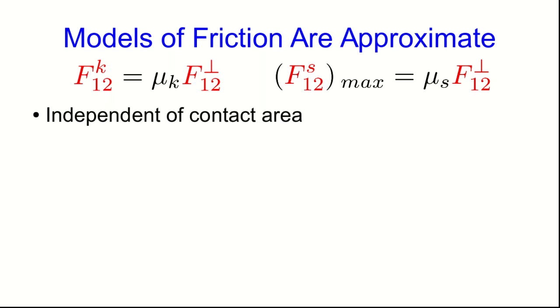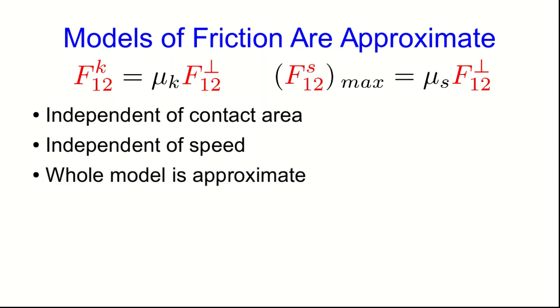One of the reasons I'm not putting more emphasis on this topic is that these models of friction are approximate. So we have these models that the kinetic friction is proportional to the perpendicular force by the same surface, and the proportionality constant is called a kinetic friction coefficient, and that the maximum static friction has a very similar formula with a static friction coefficient. And these are both independent of contact area. And I didn't say so, but also somewhat counterintuitively for most people, these forces are independent of speed.